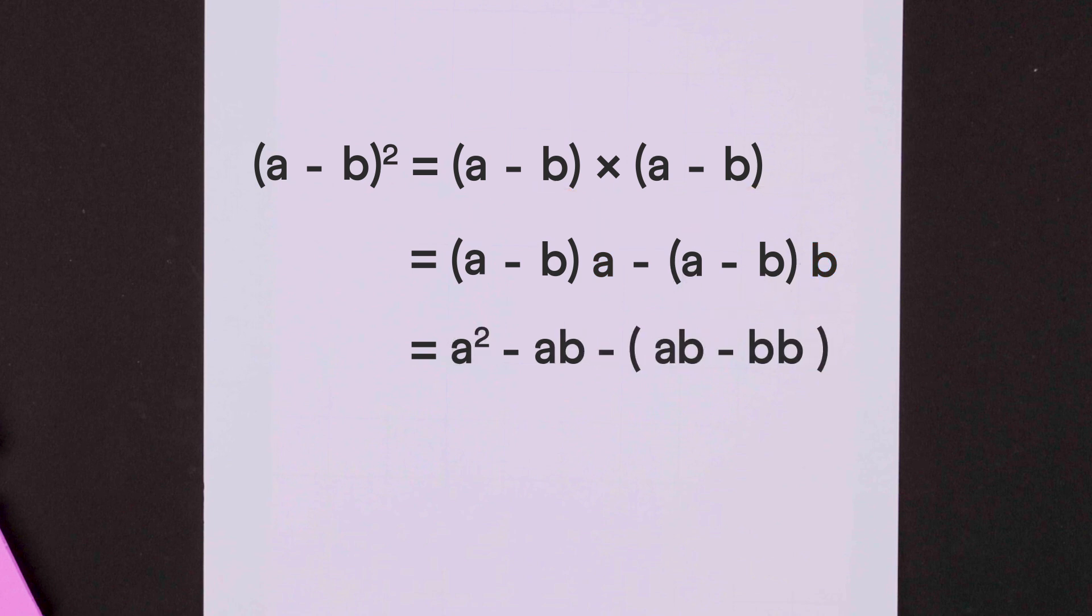Finally, we get a squared minus ab minus ab and this minus times minus gives us plus. So we get plus b squared here. Combining these two like terms, we get our identity a-b whole squared equals a squared minus 2ab plus b squared.